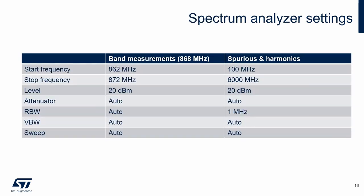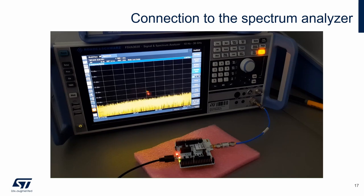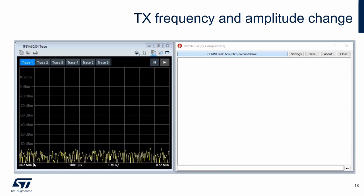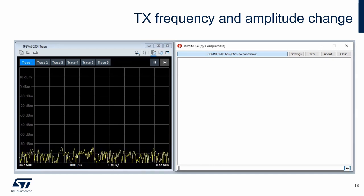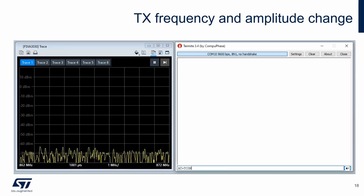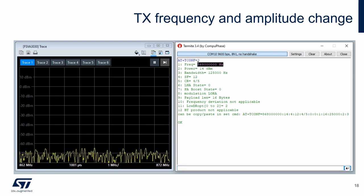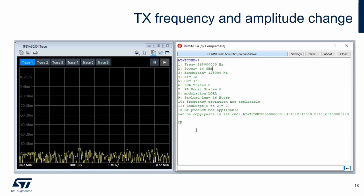The following spectrum analyzer settings were used for the transmitter measurements. The first column is for in-band measurements, and the second one is for spurious and harmonics measurements up to 6 GHz. First, we connect the measured port to the spectrum analyzer. The frequency span is from 862 MHz to 872 MHz, 1 MHz per division. I use the configuration command to get the current configuration: frequency is 868 MHz and output power 14 dBm.